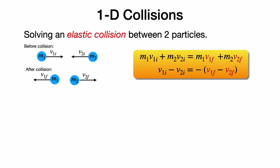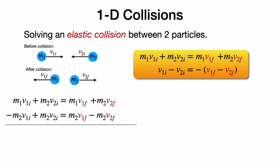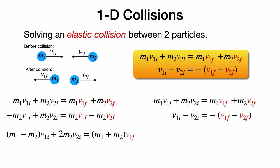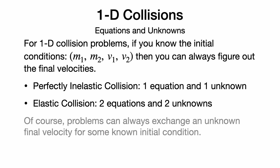We can now replace the kinetic energy equation with this linear relative velocity equation, giving two linear equations to solve for V1_final and V2_final. To find V1_final, multiply the energy equation by minus M2, then add the two equations so that the V2_final terms cancel, yielding an easily solved equation for V1_final. To find V2_final, multiply the energy equation by positive M1, then add the equations so that V1_final cancels. For one-dimensional collisions, given initial conditions M1, M2, V1, V2, we can always solve: perfectly inelastic gives one equation and one unknown, while elastic gives two equations and two unknowns.